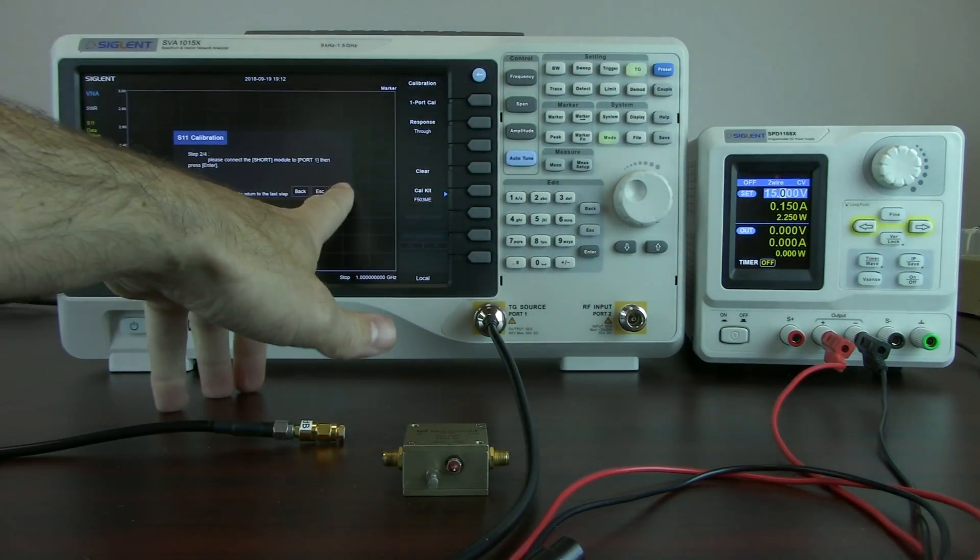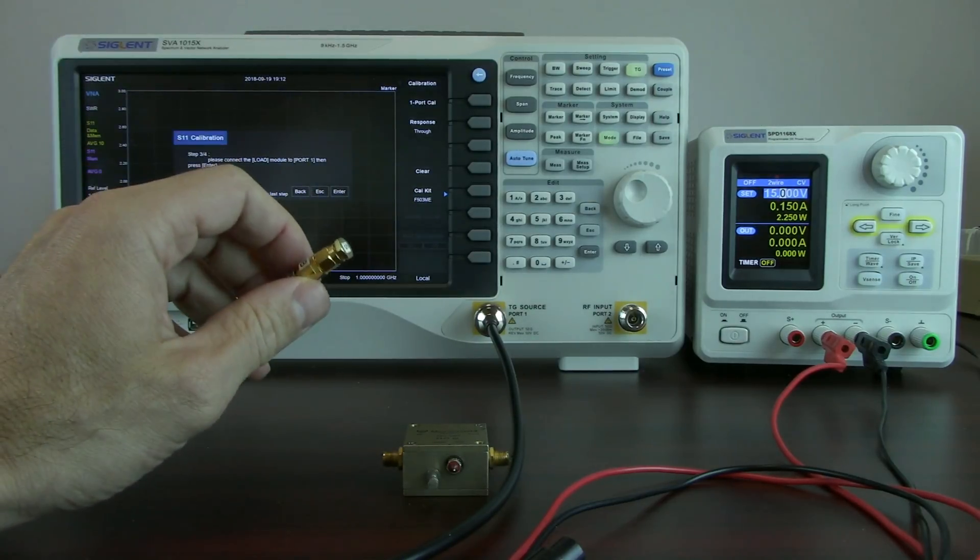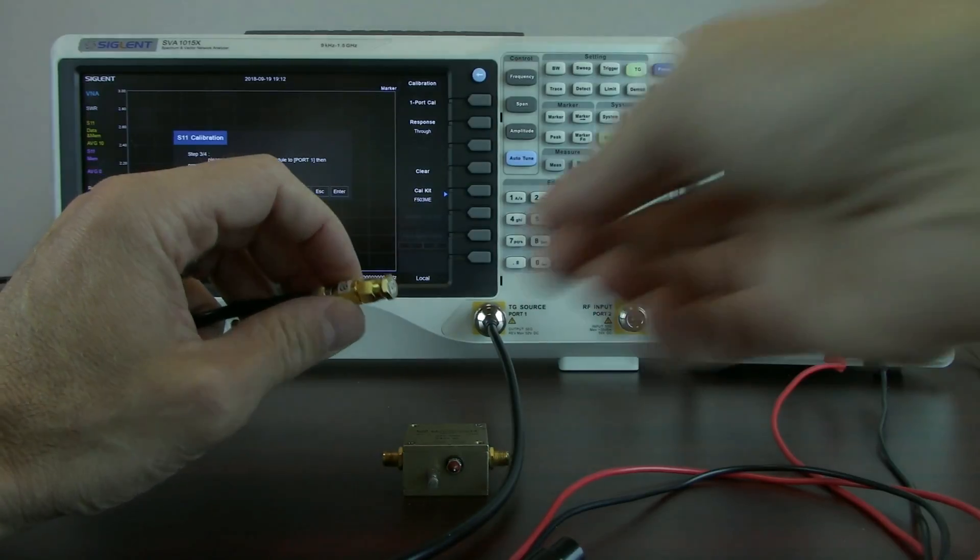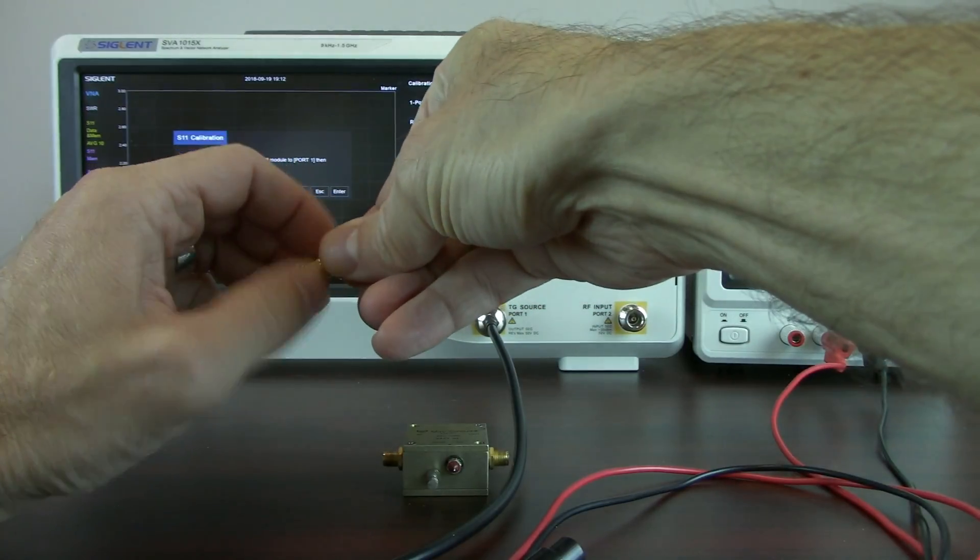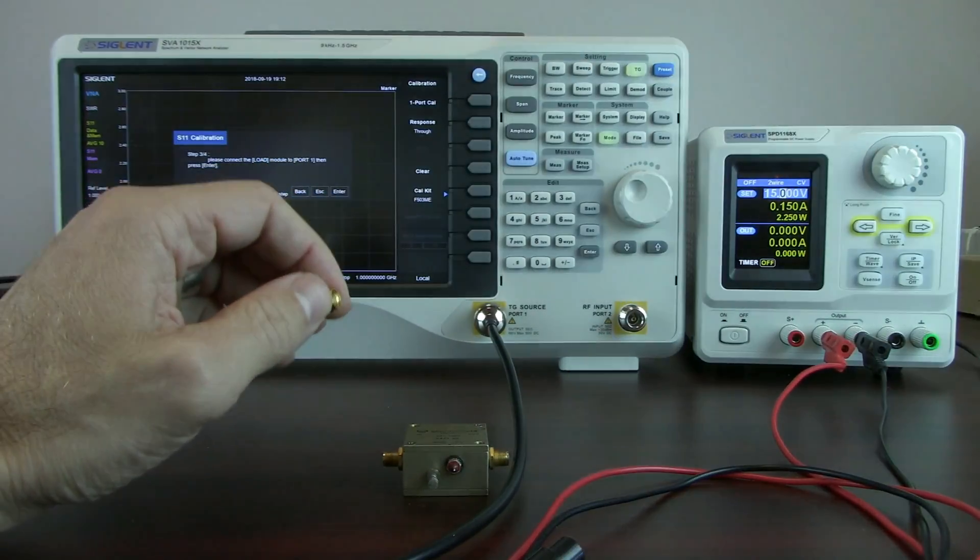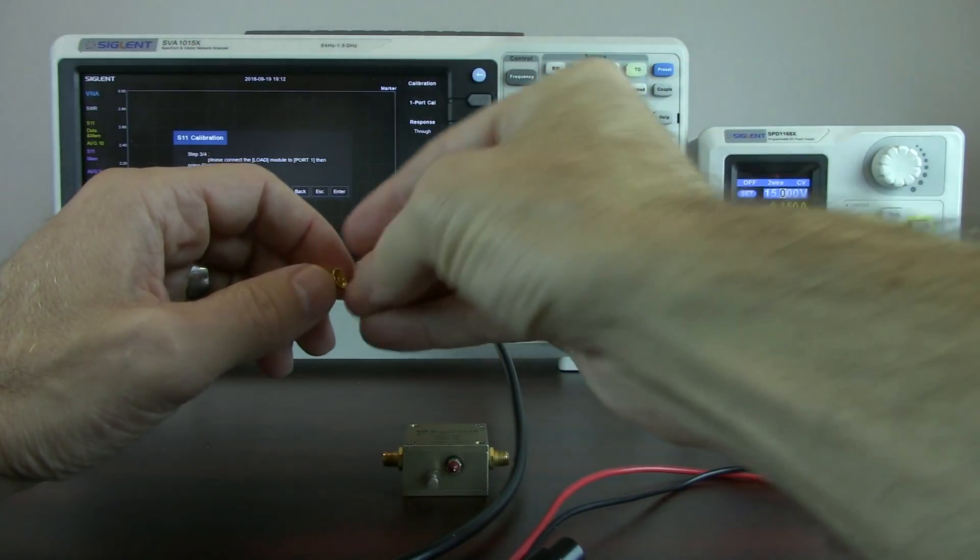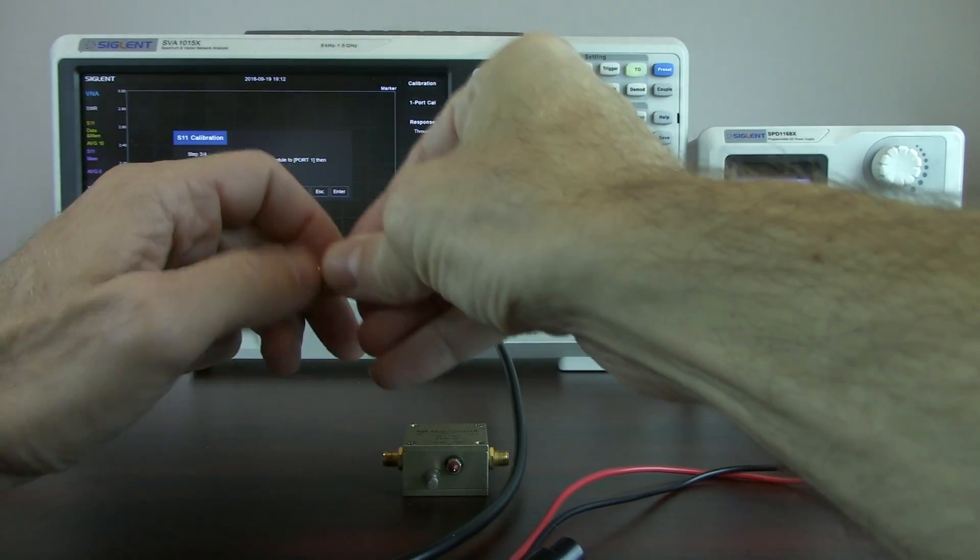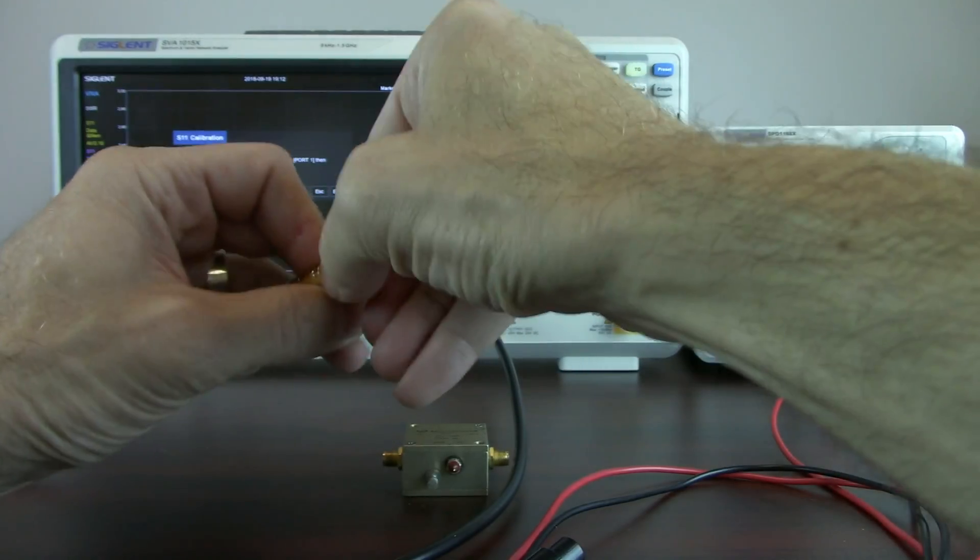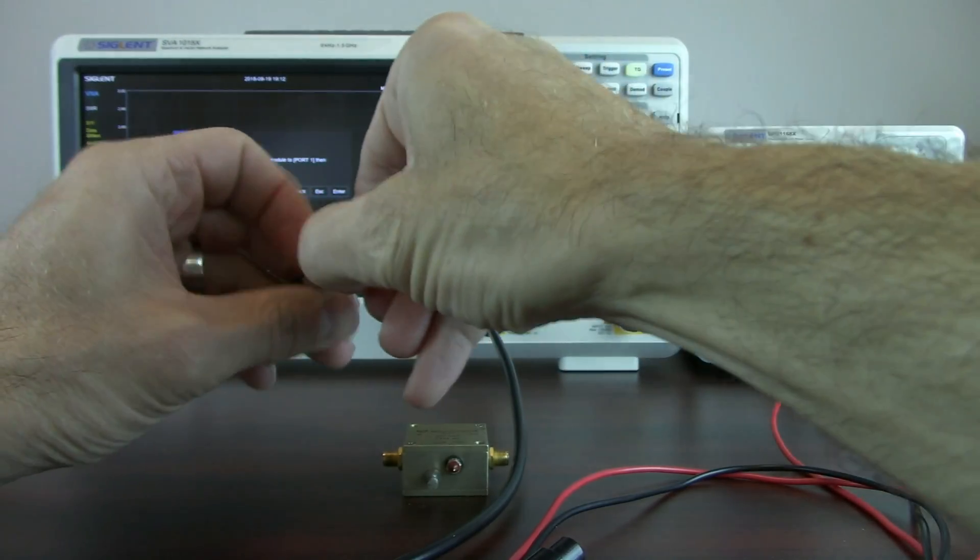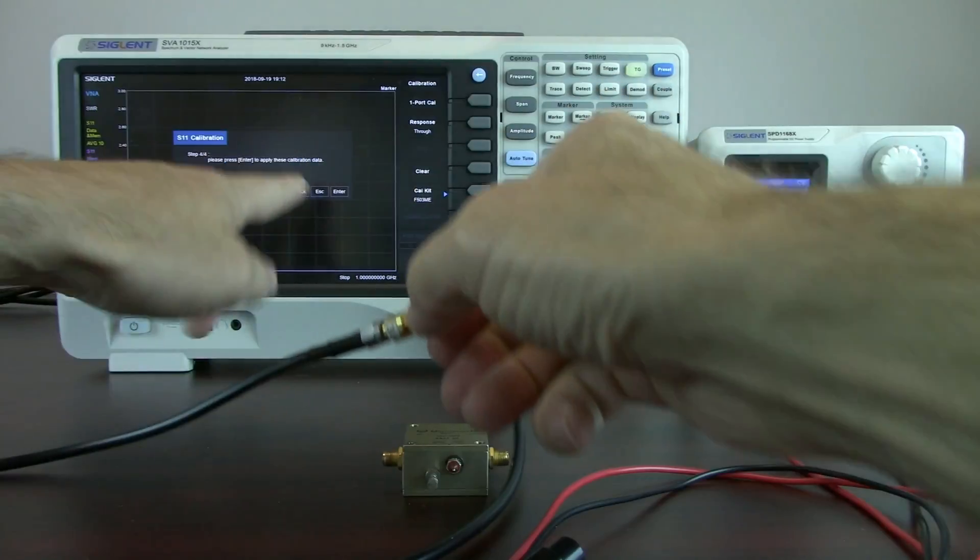In this particular case, these are not a fully characterized set of shorts and loads. So it is going to have some error, but it is going to be better than if we were to not perform that calibration. And now we want to connect the load module. So we're going to disconnect that short. And now we've got a load, this is a 50 ohm load. And we're going to then... not so easy to do actually. And hit enter. Now we're calibrated. So now we've applied that calibration.